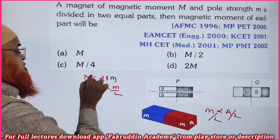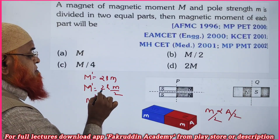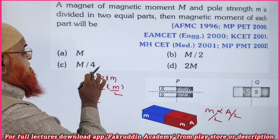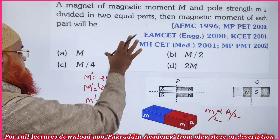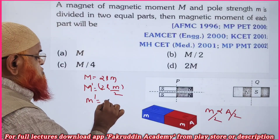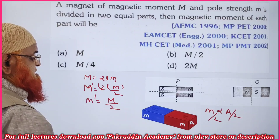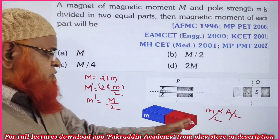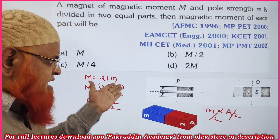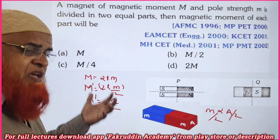Since pole strength becomes half, the magnetic moment will also become M/2. The old magnetic moment is 2l·m, so the new magnetic moment when you cut the magnet along the axial line (horizontally) is going to be M/2.